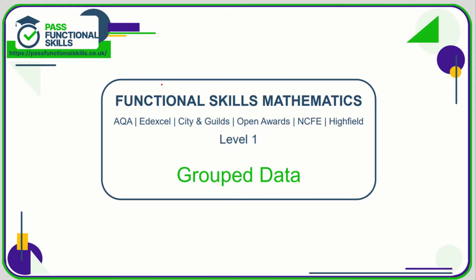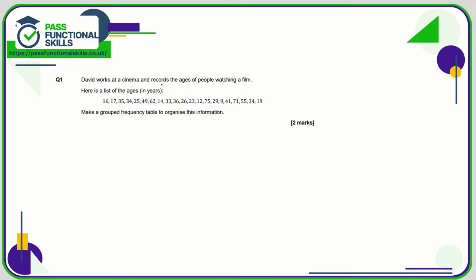Let's take a look at the grouped data questions. Question one: we need to make a grouped frequency table to organize information about the ages of people going to the cinema. It's quite a spread, going from nine up until 75. The most important thing is: do not have categories that overlap. You couldn't have a zero to ten year olds and then a five to twelve year olds, because if you're seven years old you belong to both categories.